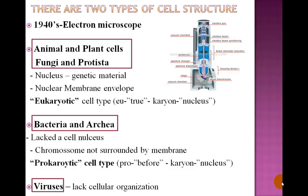Although the first electron microscope was invented in 1931, it was further developed in the 1940s. The electron microscope can amplify objects and cells thousands of times more than the light microscope. With the help of the electron microscope, bacterial cells were shown to be cellular in nature, similar to plant and animal cells, although some differences were found.